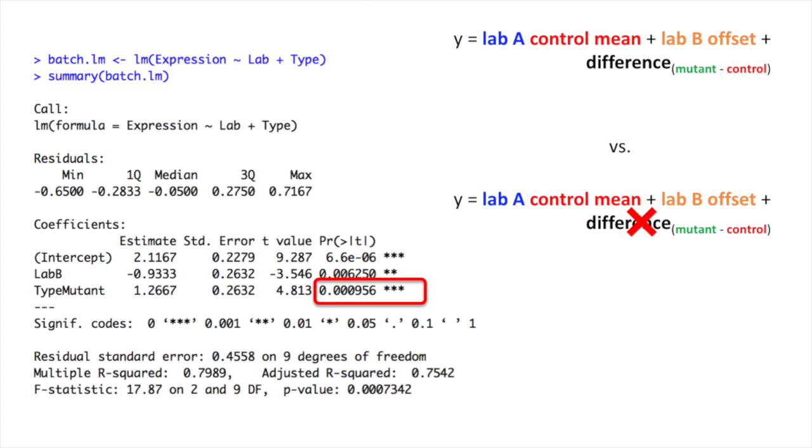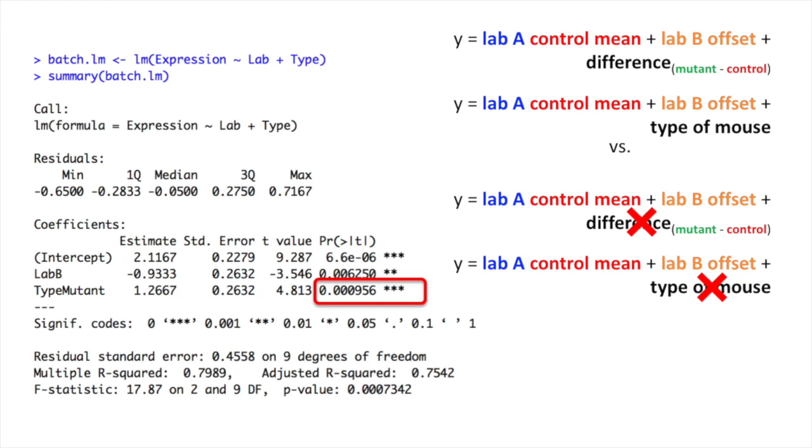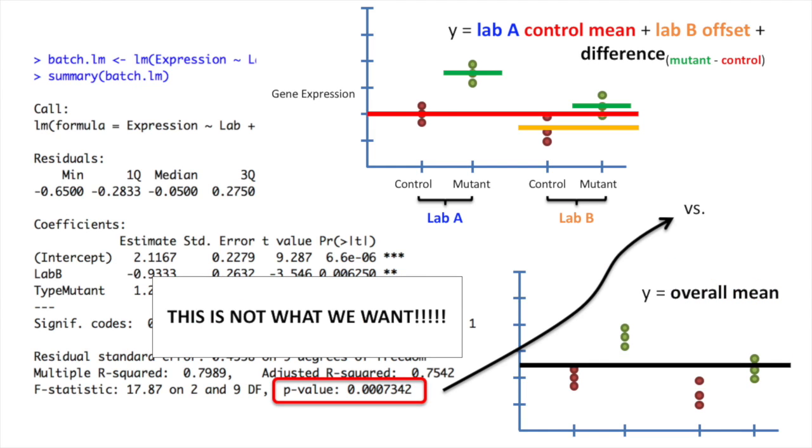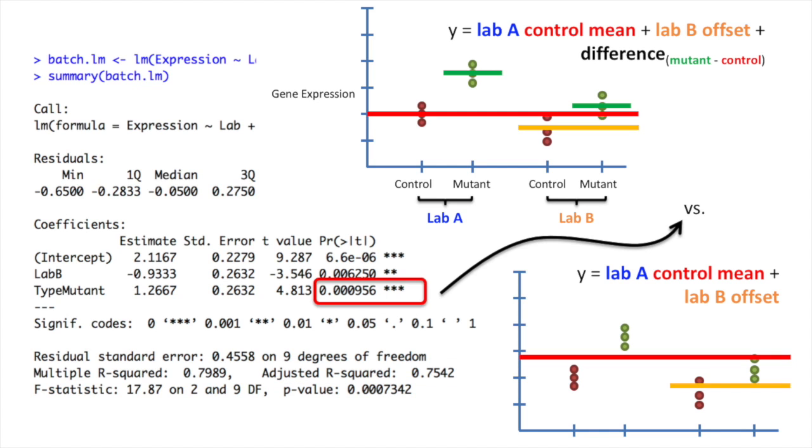This is what we want, where we're testing whether or not we can subtract the term for the different types of mice from our fancy equation and still get a good fit. Here's the p-value that we really want. So the moral of the story is that the p-value in the bottom right-hand corner isn't always the p-value that you want. It reflects the comparison of your fancy equation to the simplest equation possible. If that's not what you want, then you're going to have to look around at the other p-values that the linear models function reports. Maybe that's the one you need.